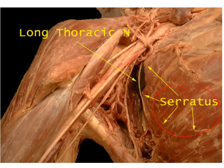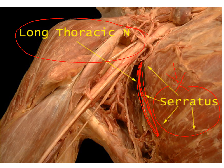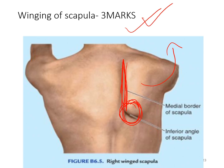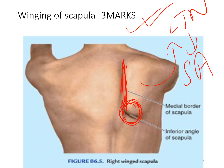Serratus anterior is supplied by the long thoracic nerve. If any condition damages this nerve, the muscle becomes paralyzed. In that case, when you try to push a wall or punch something, instead of the scapula moving forward, the medial border and inferior angle of the scapula become very prominent. This condition is known as winging of scapula, caused by injury to the long thoracic nerve leading to paralysis of serratus anterior.